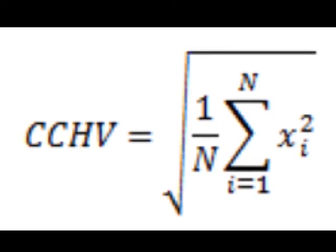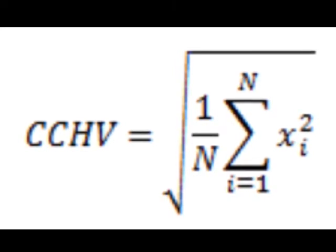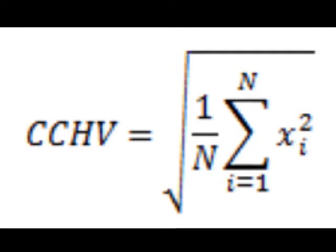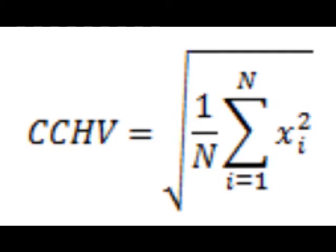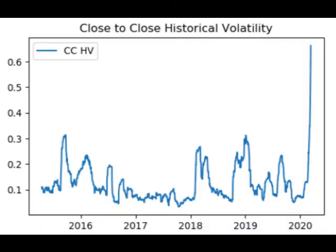There are various types of historical volatilities, such as Close to Close, Parkinson, Garman-Klass, Yang-Zhang, etc. In this post, we will discuss the Close to Close Historical Volatility. The Close to Close Historical Volatility is calculated as follows.